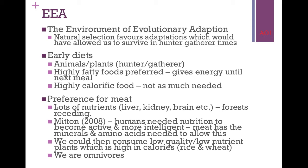Researcher Mitten backs this up, suggesting that to reach our current developmental stage — being intelligent and active compared to other species — we would have had to eat meat. We couldn't have reached this stage relying only on plants, vegetables, and fruit. Meat had the minerals and amino acids needed for evolutionary development. This then meant we could also consume lower-quality, high-calorie plants to sustain us between meals. We are omnivores — we eat lots of different things.